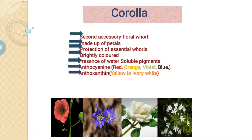Corolla is made up of petals. The petals are protection of essential whorls and the petals are usually bright in color because of the presence of water-soluble pigments. There are two types of pigments present. First one is Anthocyanin, which produces red, orange, violet and blue color. Second one is Anthocyanin, which produces yellow to ivory-white color.